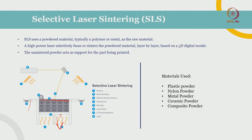The major advantage of the SLS machine is that, unlike the previous two mechanisms, it does not require any kind of support material, because the un-sintered powder itself acts as support. The surface finish is not as great as SLA, but post-processing is a little bit easier, and the unused powder can be reused — that is one major advantage. The materials available for SLS include plastic, nylon, metal, ceramic, and composites, and new materials are being introduced every day.